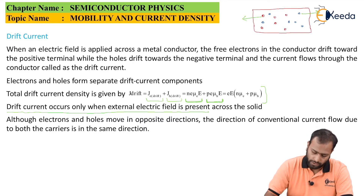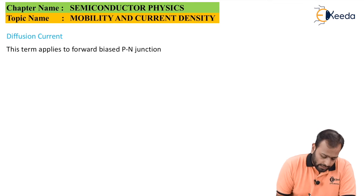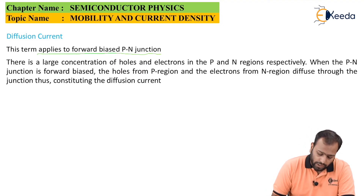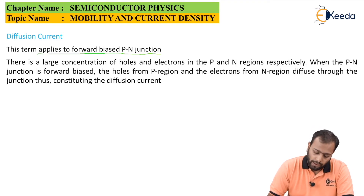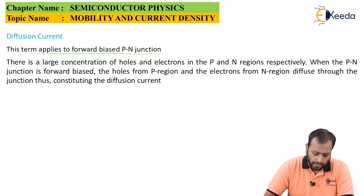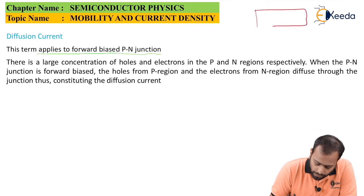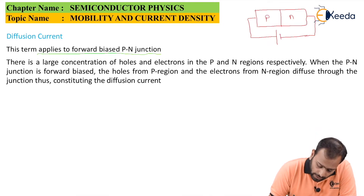Now let's talk about diffusion current, which is applicable only to P-N junctions. There is a large concentration of holes and electrons in the P-N junction region. When the P-N junction is forward biased, the holes from the P side and the electrons from the N side diffuse through the junction, constituting the diffusion current. In a diode, the P part and N part are joined at the junction.